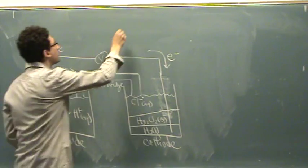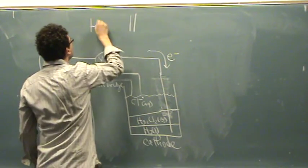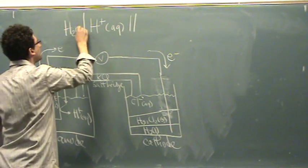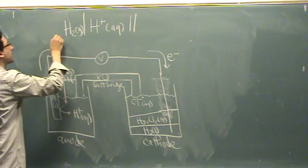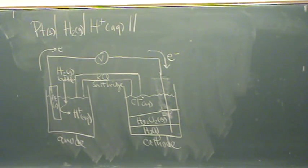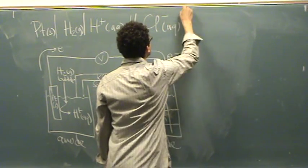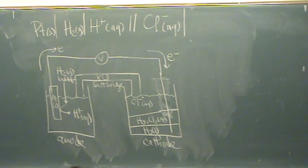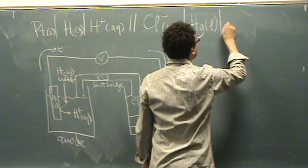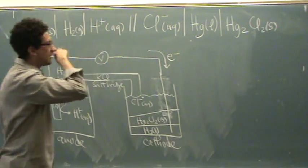So double line. We have H+ aqueous for the anode. Vertical line. H2 gas. So we're going to put different phases in different sections. In line. Platinum solid. Electrode. Now let's do the right hand side. We have the chlorine minus aqueous. In this case, the next is the liquid. Even though it's an electrode, it's going to be the next one. And then finally, the solid. So the solids go on the outside. The right outside of the picture.